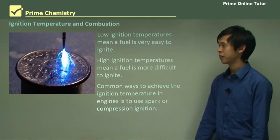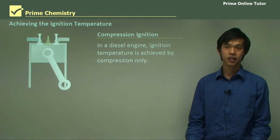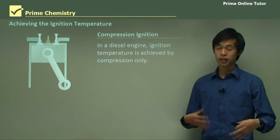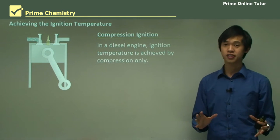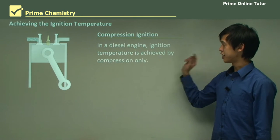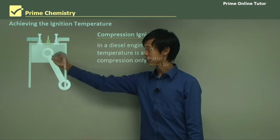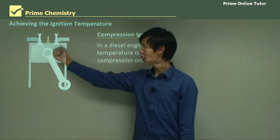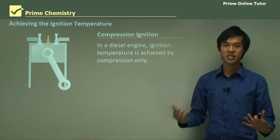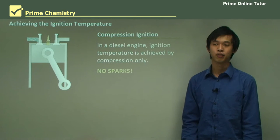That was your petrol engine — we saw how the spark ignition engine works. In a diesel engine, ignition is achieved by compression only. Where the petrol engine used a spark at the top of the stroke, in a diesel engine combustion happens by itself with no spark. That's the key with diesel — you just don't need a spark, which means you need less electricity from your batteries and things like that.